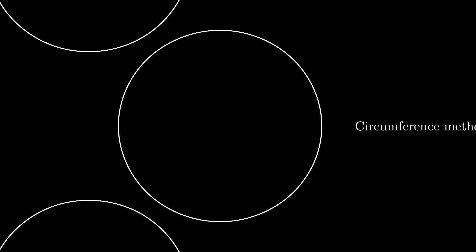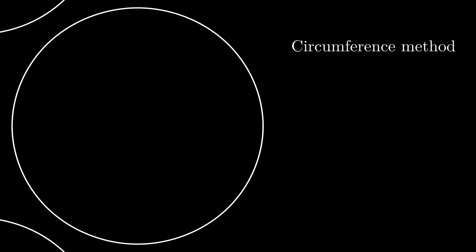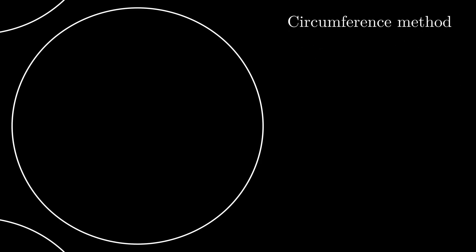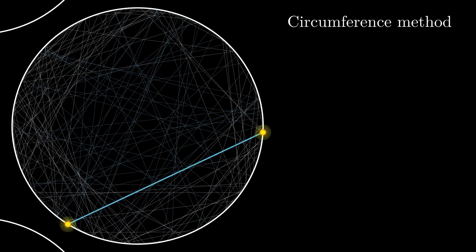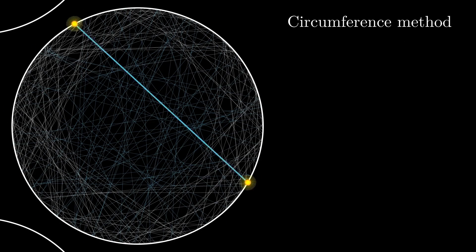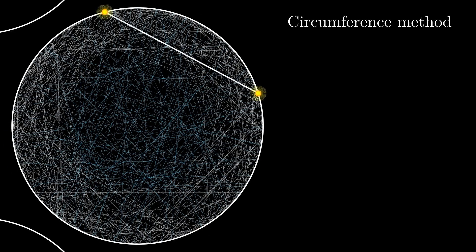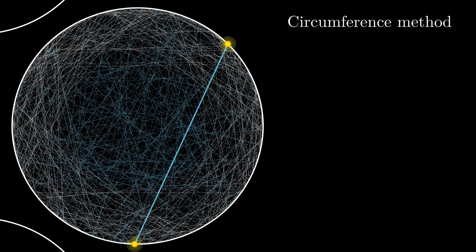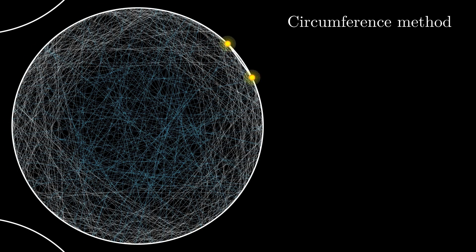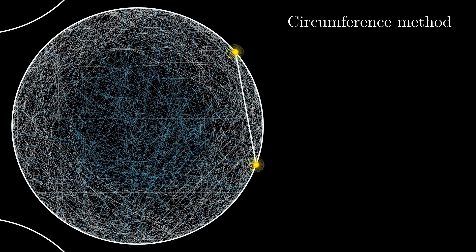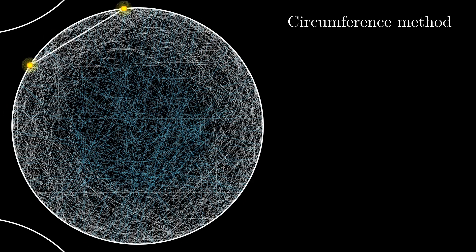In this video, we are going to talk about the expected length of the chords when we choose the chords with different random methods. We start with the simplest of them, the circumference method. To select a random chord, we choose two points uniformly randomly on the circumference of the circle and connect these points. The endpoints of the chord are then uniformly distributed around the circle, giving us the random chord.